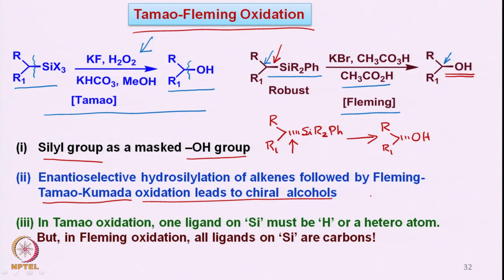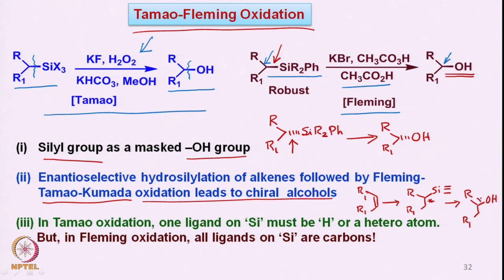That means, if one starts with an olefin and converts it to a silyl group where an asymmetric center is created, and if this is a chiral compound, then upon this oxidation the corresponding alcohol can be obtained in a chiral fashion. Starting with a chiral substrate, one gets the corresponding chiral alcohol because the oxidation that occurs is a highly stereospecific or stereoselective reaction.